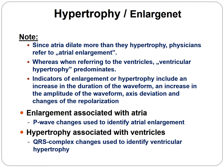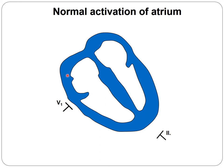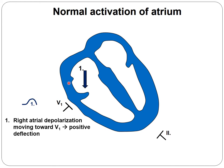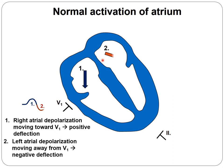How does normal activation of the atrium occur? At the SA node, the impulse first activates the right atrium, and a little bit later the left atrium is depolarized. This is why the two depolarization waves point first to the right and then to the left. This is why in V1 we have a biphasic curve — the first phase represents the right atrium while the second one represents the left atrium.